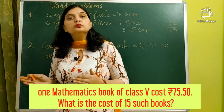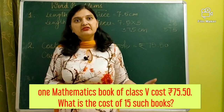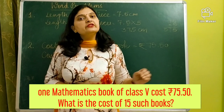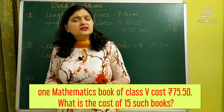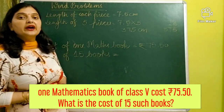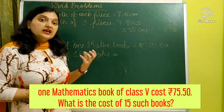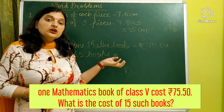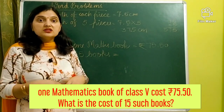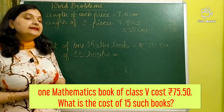Next question: one mathematics book of class 5 costs rupees 75.50. Find the cost of 15 such books. The cost of one math book is 75.50 and you have to find out the cost of 15 books. More books means naturally more cost, and for more we will multiply.